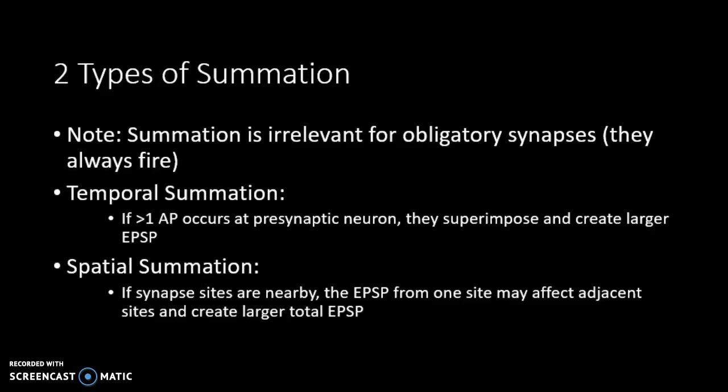There are two types of summation. Obligatory synapses require only one presynaptic action potential to bring the postsynaptic membrane to the critical firing level. Temporal summation occurs when more than one AP at the presynaptic neuron superimpose and create a larger EPSP — consecutive synaptic potentials at the same site are added together in the postsynaptic cell, providing a longer window to reach threshold.